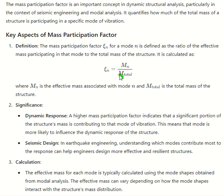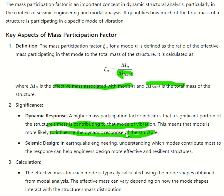The mass participation factor for mode N is defined as the ratio of the effective mass participating in that mode to the total mass of the structure. M_total is the total mass of the structure, and M_N is the effective mass associated with that particular mode. A higher mass participation factor indicates that a significant portion of the structure's mass is contributing to that mode of vibration — meaning that mode is more likely to influence the dynamic response of the structure.